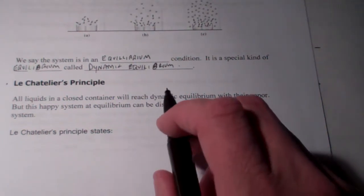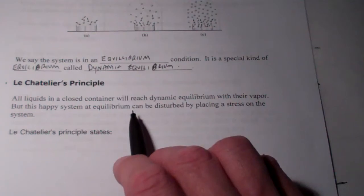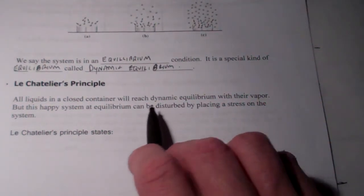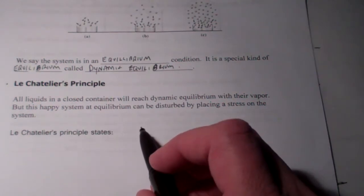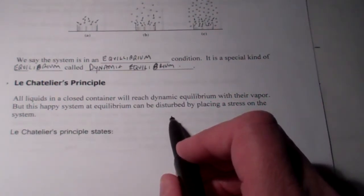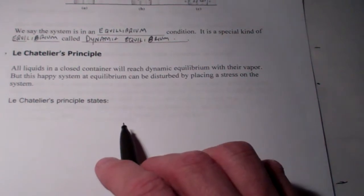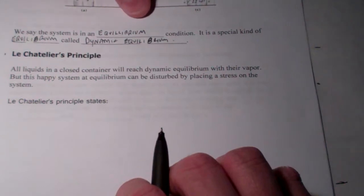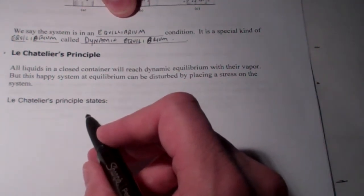Before we were talking about liquids in a closed container, and we said that they will reach dynamic equilibrium with their vapor, but this happy system at equilibrium can be disturbed by placing a stress on the system. Le Chatelier's Principle is an important concept that we will talk about quite a bit in a later chapter. We're just going to discuss it a bit today.